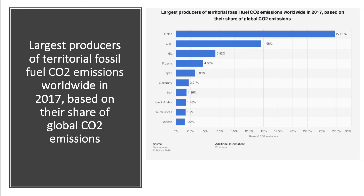Typically, countries with the highest GDP have the highest levels of CO2 emissions. China, on a PPP basis, is the biggest economy in the world, the United States second, India third — and that's reflected in the largest producers of territorial fossil fuel CO2 emissions in 2017, with China accounting for 27% of global CO2 emissions. It's going to take concerted, coordinated policy action between the major countries to make a decisive difference in reducing emissions per dollar of GDP.